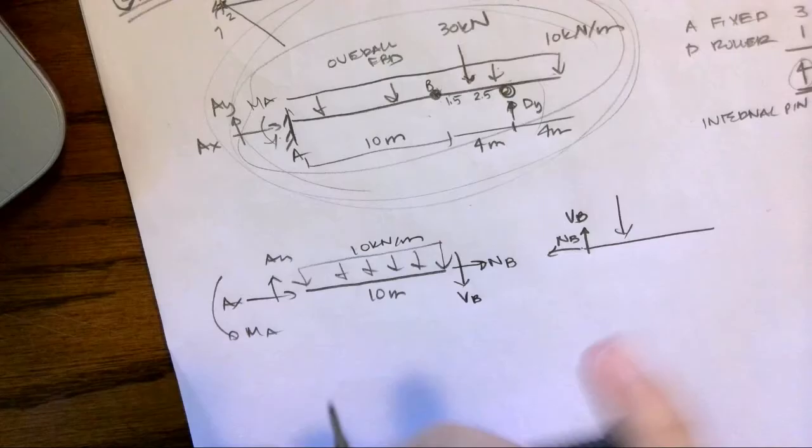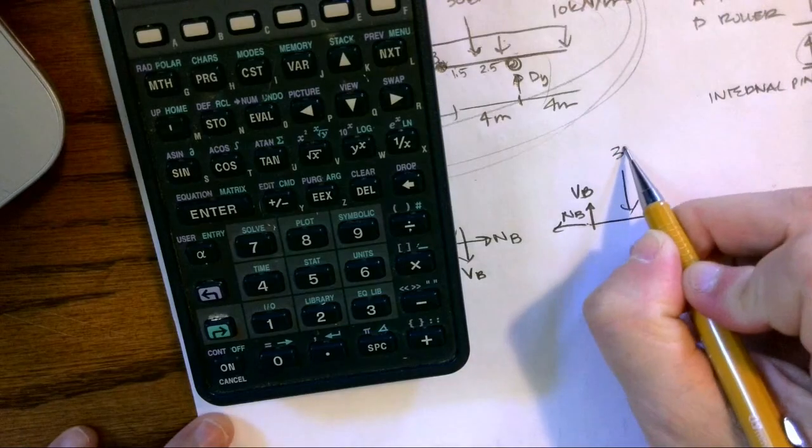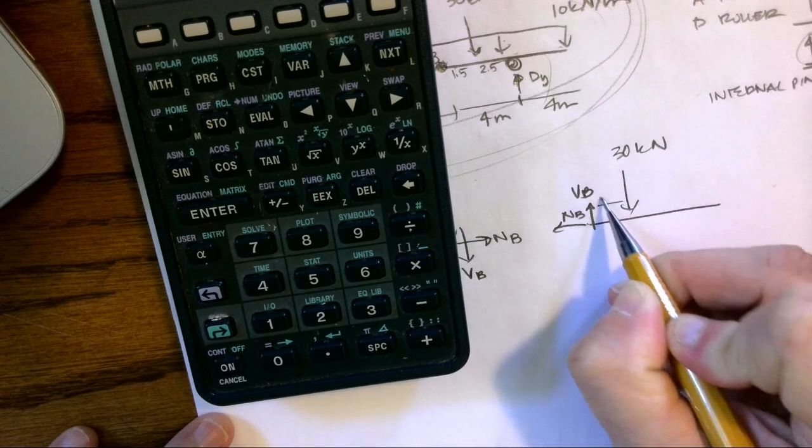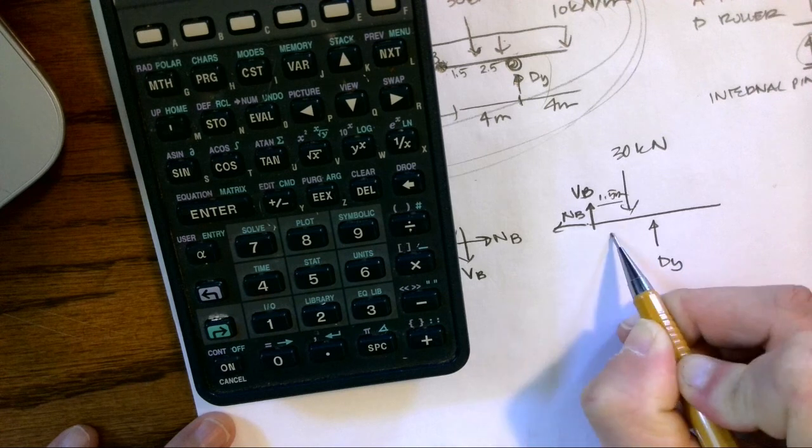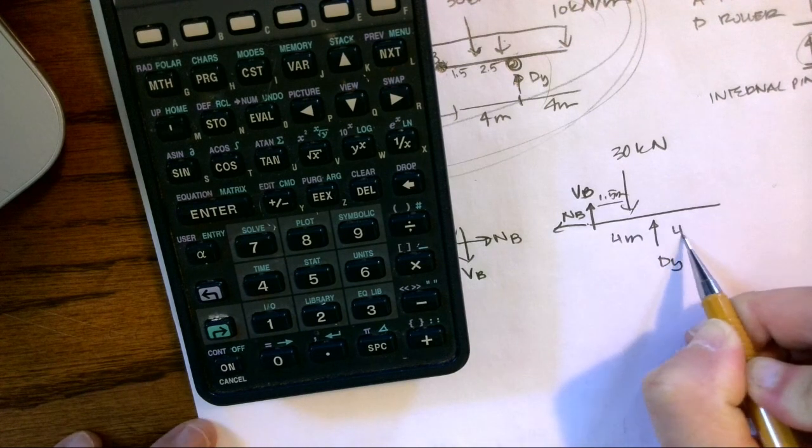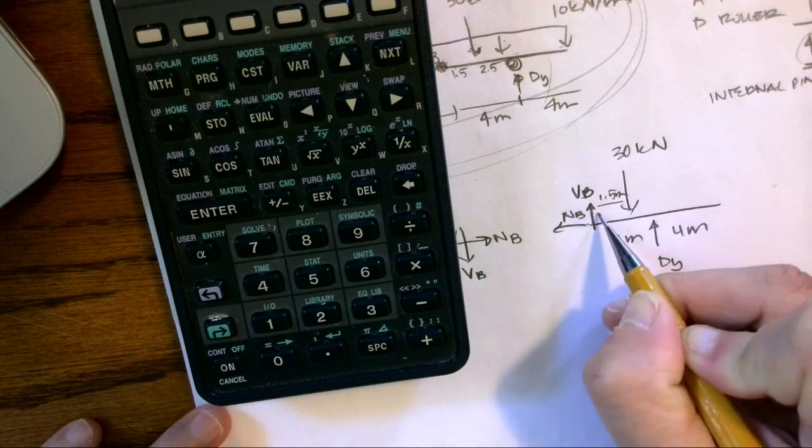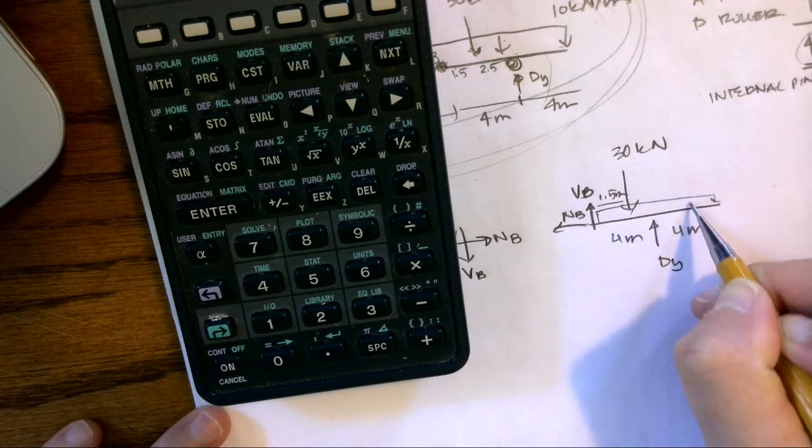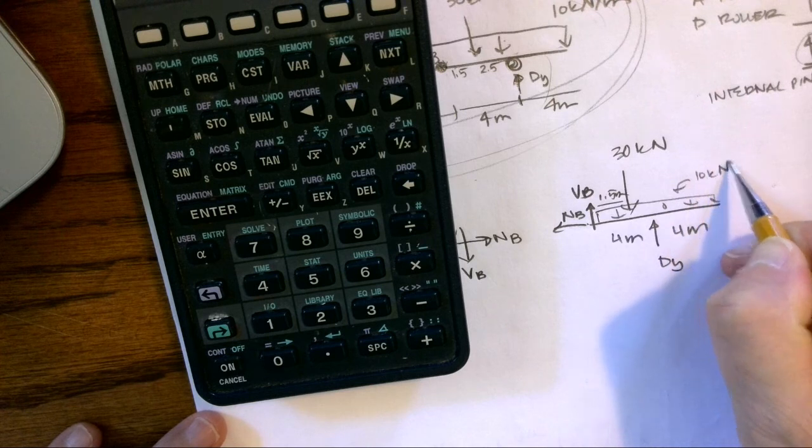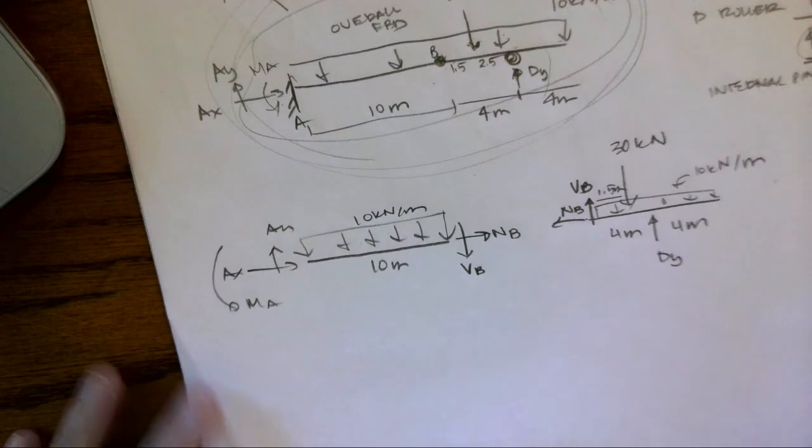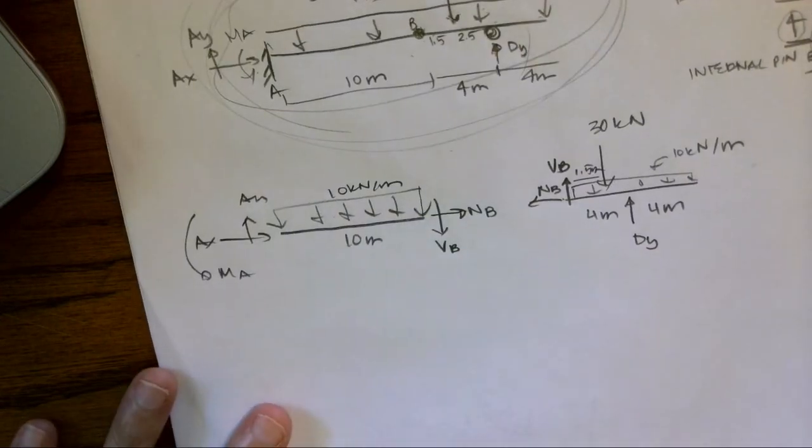So now I can finish drawing. We're gonna cover it up. I have 30 kilonewtons and this is 1.5 meters. I have DY, which is 4 meters and 4 meters to the end of the beam. And then I also have that uniform load that is 10 kilonewtons per meter. So this is how I came up with that free body diagram.